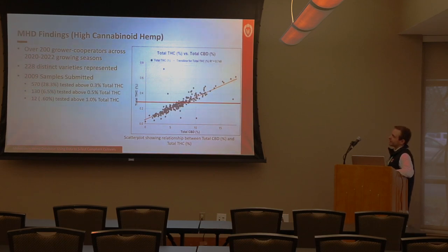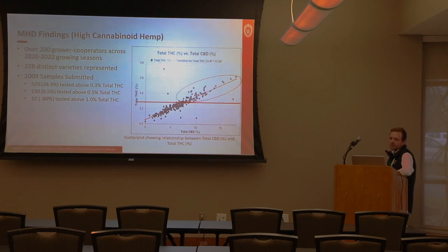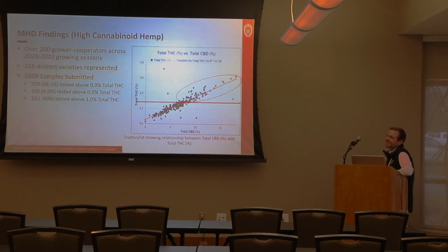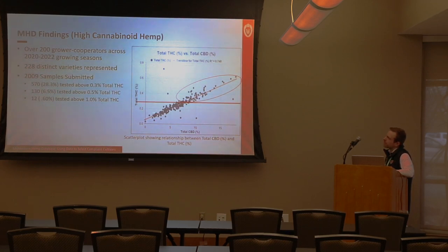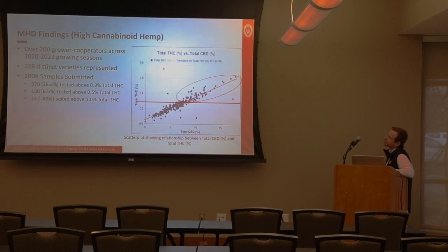Of over 2,000 samples submitted for high-cannabinoid hemp over the last few years, 28 percent were non-compliant. This means all of those crops would have had to be destroyed if submitted to a regulatory agency. We want varieties that reliably stay below the 0.3 percent THC threshold or produce cannabinoids in a way growers can effectively monitor and harvest at end of season. Again, 28 percent of those seed lots would have had to have been destroyed under regulatory sampling.